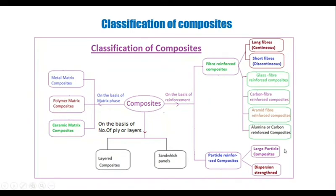On the basis of matrix phase, the composites are classified into three categories: metal matrix composites, polymer matrix composites, and ceramic matrix composites.